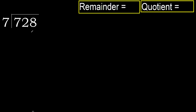728 divided by 7. 7 is not less, therefore start with 7. 7 multiplied by which number is nearest to 7 but not greater? 7 multiplied by 2 is 14 — 14 is greater. Multiply by 1 is 7.